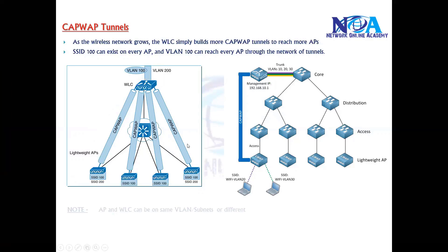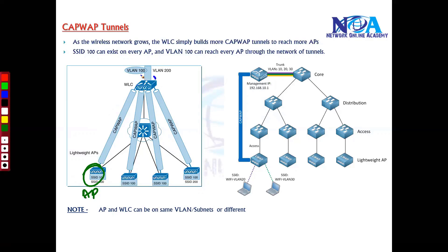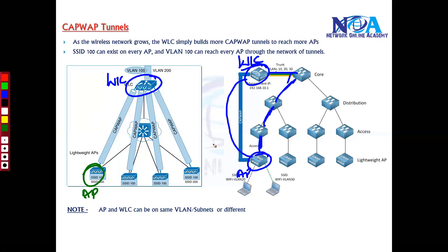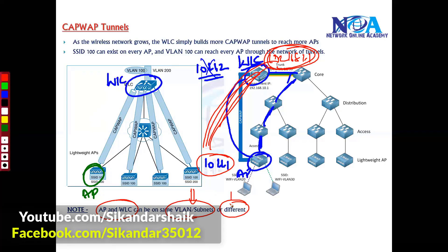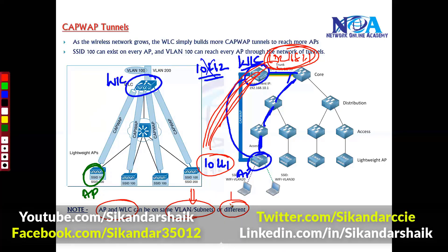The access point and the WLC do not need to be directly connected. They can be physically far apart with multiple switches in between. They can be on the same subnet — for example, 10.1.1.1 and 10.1.1.2 — or on completely different subnets, like 192.168.1.1 on a different VLAN. As long as there is IP reachability between the access point and the WLC, the CAPWAP tunnel can still be established.